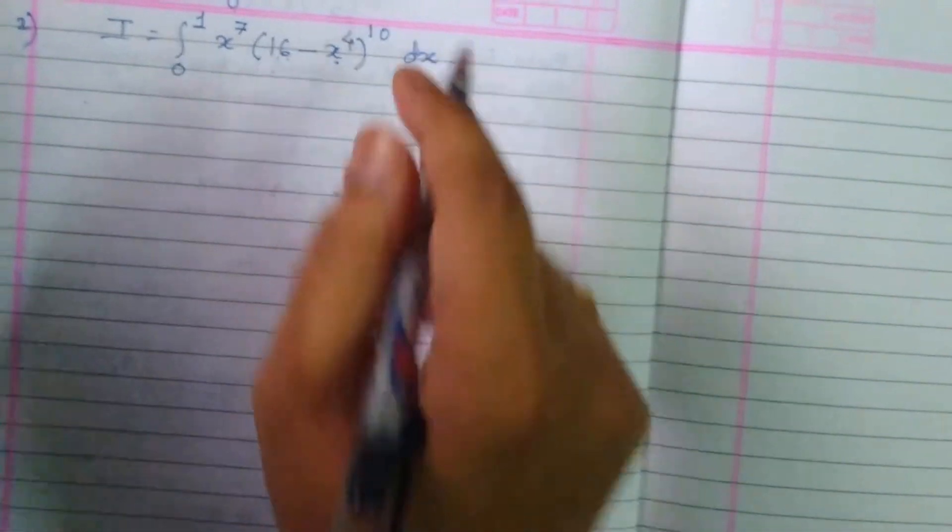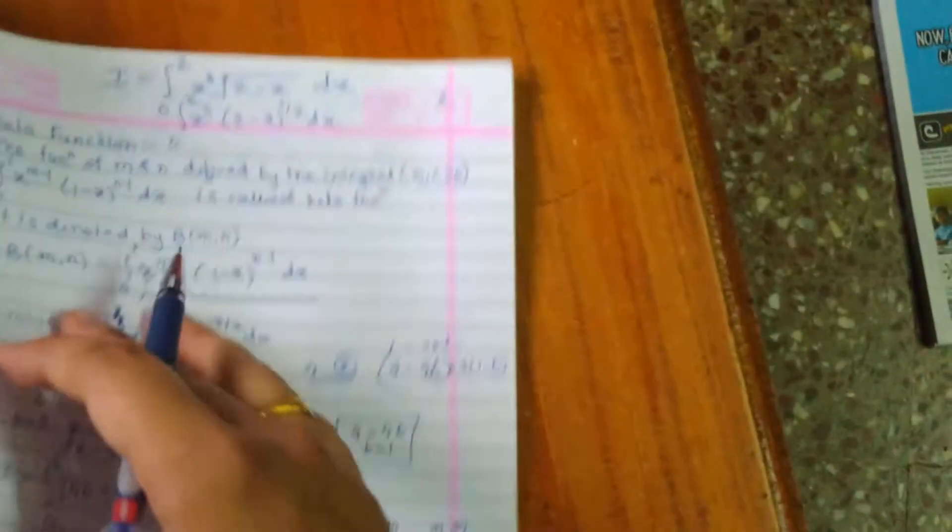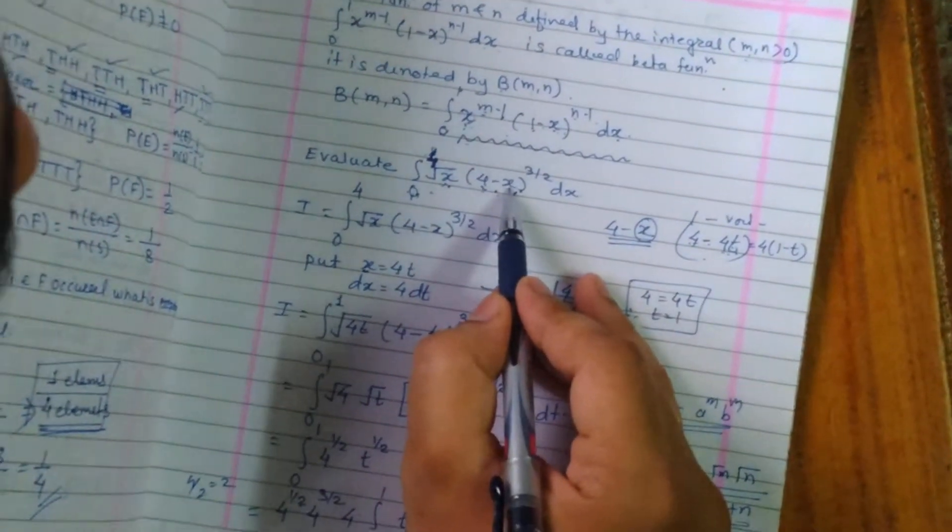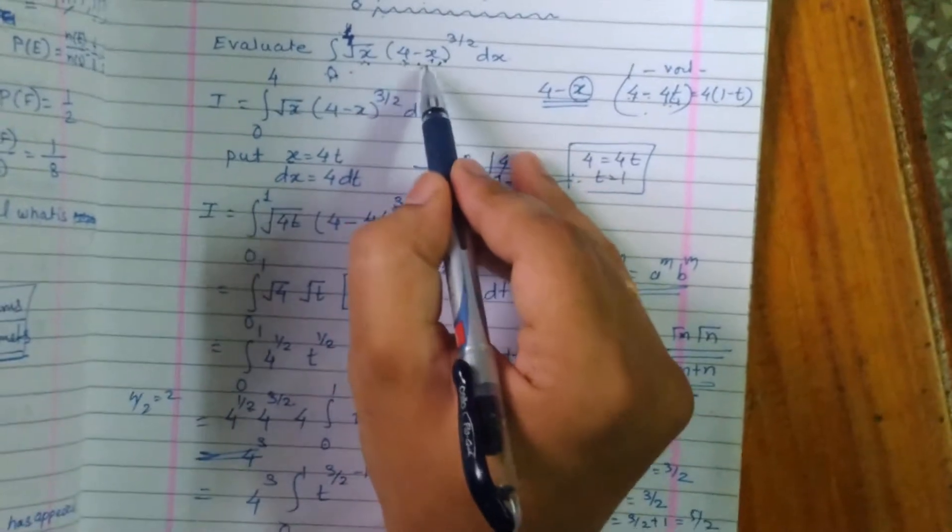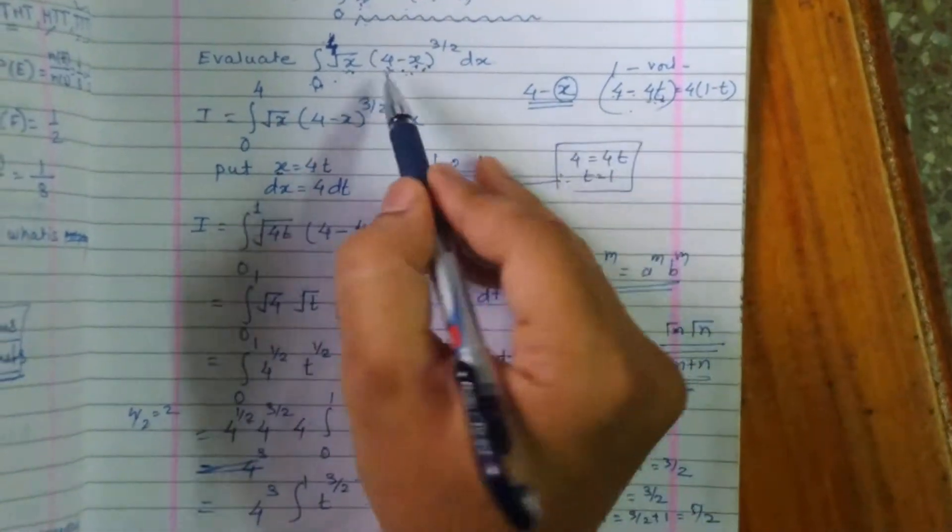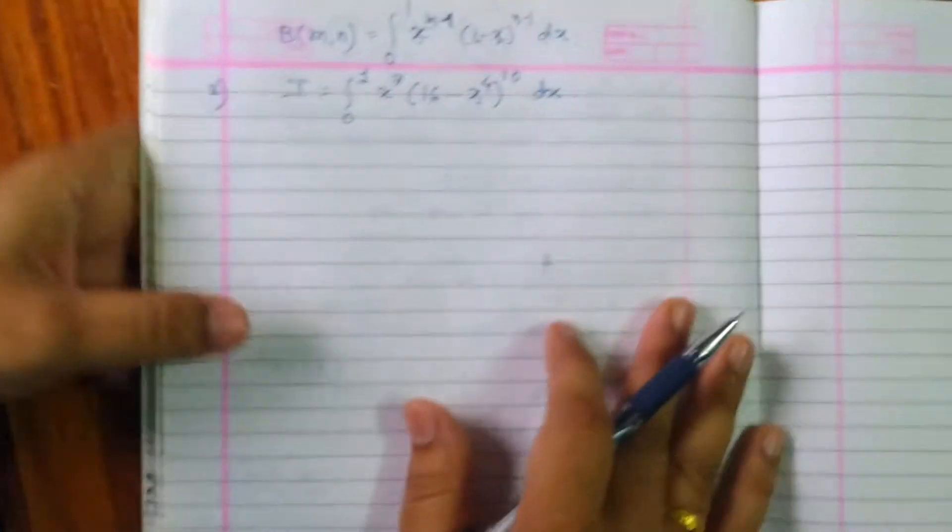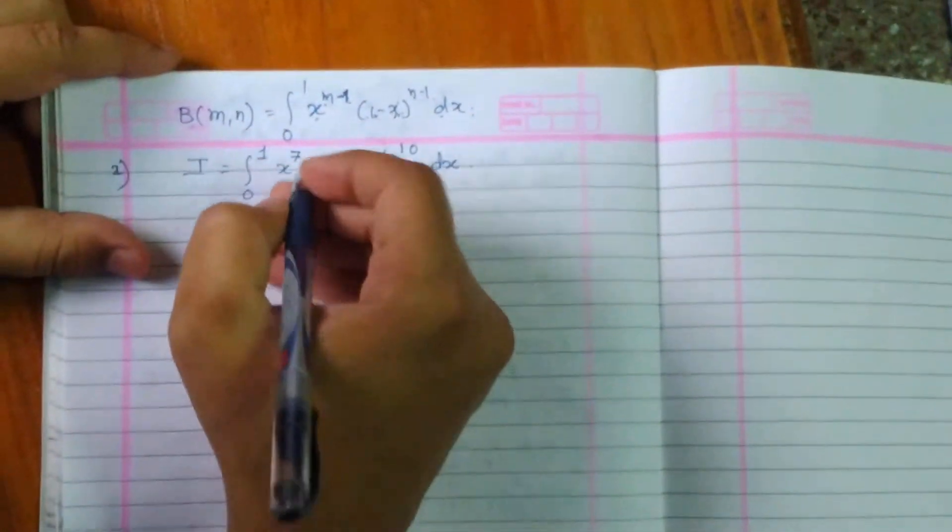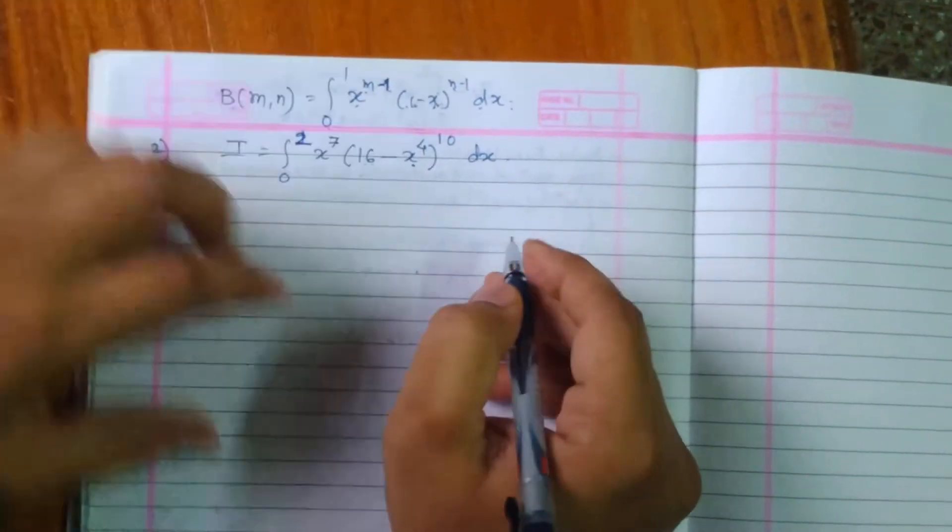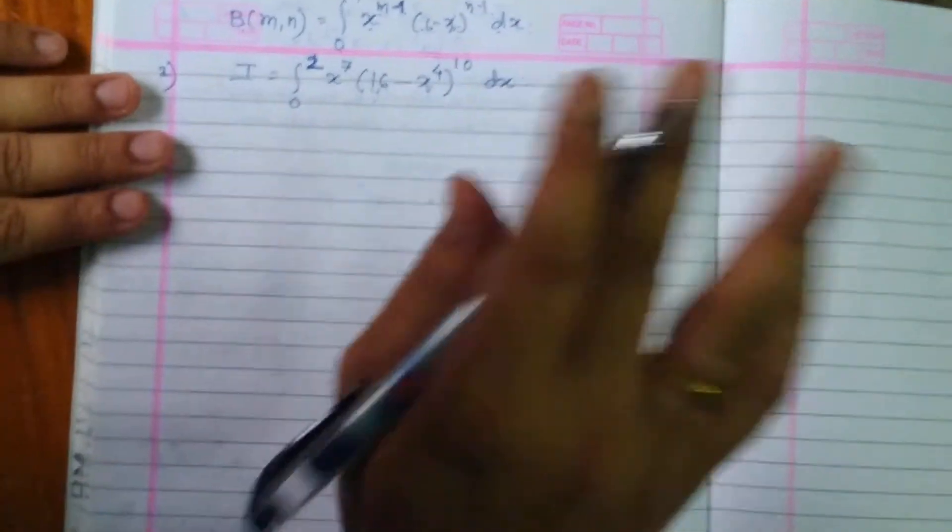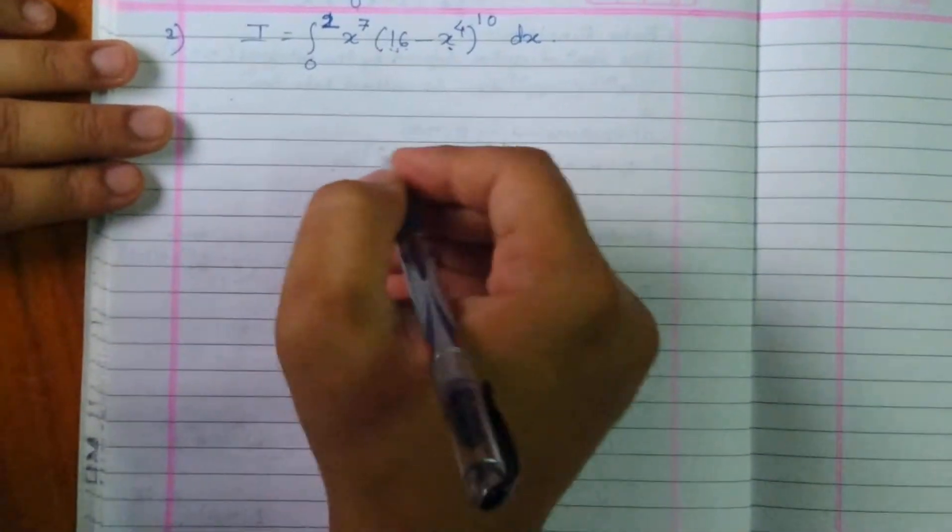So now you can just look at the previous example here. What we have done in this case? We replaced x by multiples of 4, that is 4t, and we simplified the problem further. But here it is 16 and here x raised to 4.